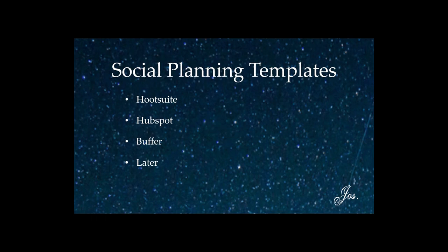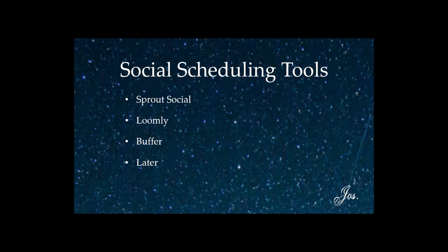As we're wrapping up, here are some tools we really like for social planning. For scheduling posts, great options include Hootsuite, HubSpot, Buffer, and Later — these let you batch-prepare your posts for the week rather than managing them day to day. At Joseph Studios we really like Sprout Social for scheduling — it has analytics, listening, and scheduling all built in. Loomly, Buffer, and Later are all great options for scheduling posts out.